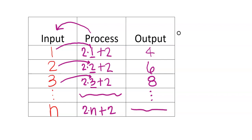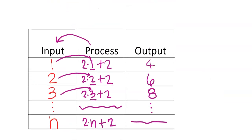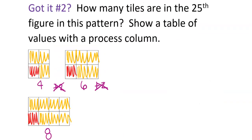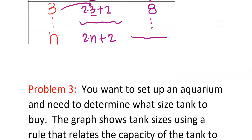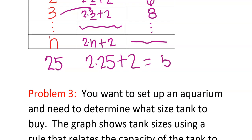The process is two times the input plus two, or 2n + 2. For the 25th figure, take two times 25 plus two, which is 50 plus two, equaling 52. So there would be 52 tiles in the 25th set.